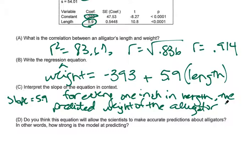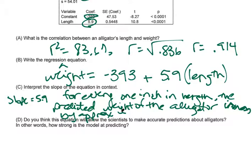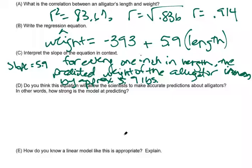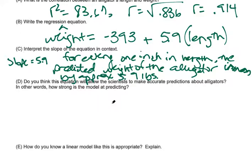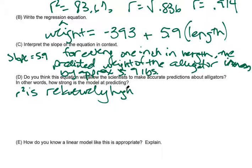Do you think this equation will allow the scientists to make accurate predictions about alligators? In other words, how strong is the model at predicting? Well, we go back up here and we see r squared is 83.6, so the variance is pretty high. That means that 83 percent of the alligators weight, the predicted weight, can be explained by the length. 83.6 percent is pretty high.